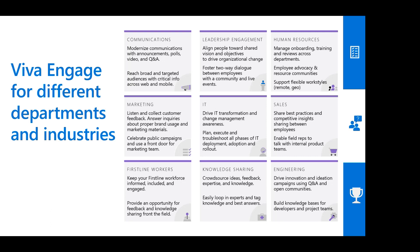This slide shows ideas for leveraging Viva Engage across different departments and industries. A couple I'd highlight: under first-line workers, you can keep them informed, included, and engaged — these are people who may not be sitting at a desktop all day, maybe just on a tablet or mobile phone, so this is a nice way for them to stay up to date while servicing your organization's customers. Under human resources, if you think about onboarding and training, it's a great way to have a new employee community where people are members for their first 60 or 90 days, with announcements and training all delivered through that experience.